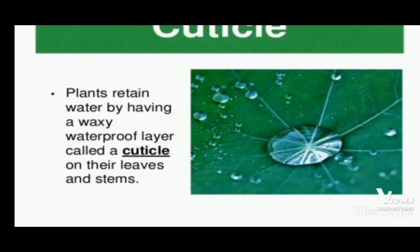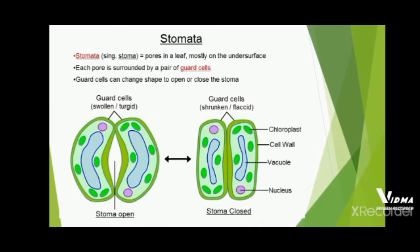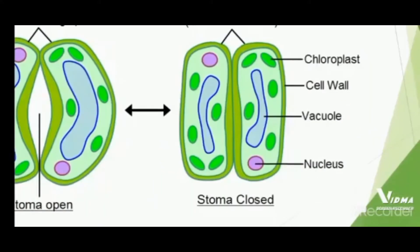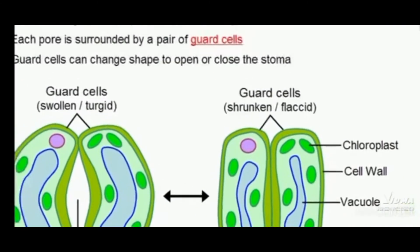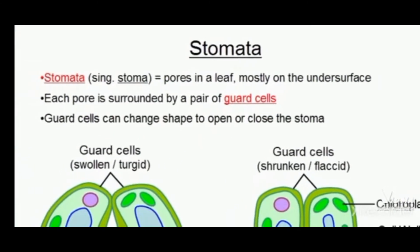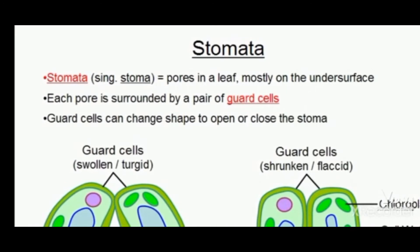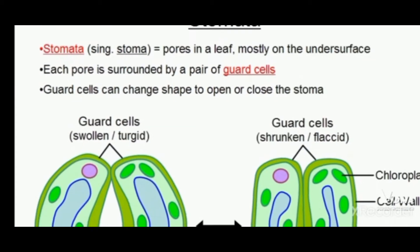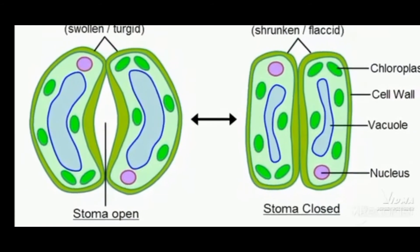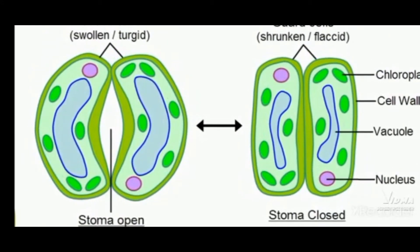Now we will talk about stomata. Stomata are pores in the leaf, mostly on the undersurface. Each pore is surrounded by a pair of guard cells. Guard cells can change shape to open or close the stomata. You will see an open stomata and a closed stomata — water can go inside or come outside, and then it will be closed afterwards.